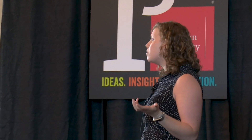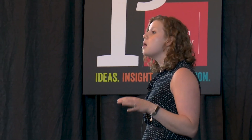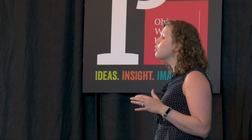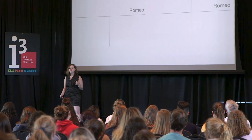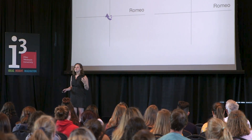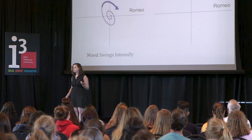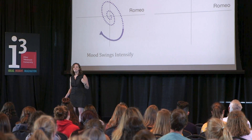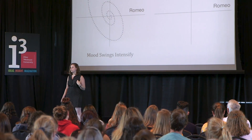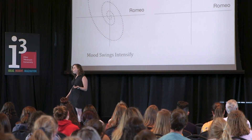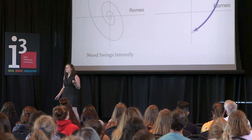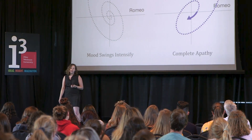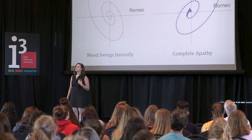Romeo and Juliet probably live somewhere in between. But depending on their personalities, they could end up in a cyclical situation of mood swings that intensify forever — I think this is what Shakespeare was going for. Or the relationship could dwindle to complete apathy. And this brings us to lesson three.